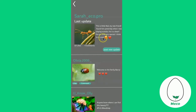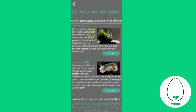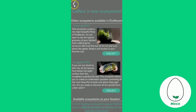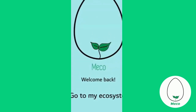Finally, on the collect a new ecosystem page, you can find all sorts of ecosystems you want to build that are possible around your area. We will give you recipes and tutorial videos on how to make them yourself and even where you can go out and find your ingredients near you. Now it's time for you to go out and explore and learn what it takes to create and maintain a fully working ecosystem.